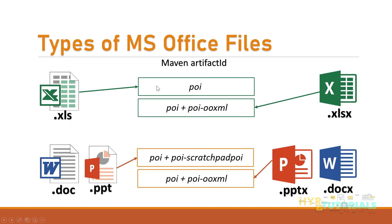For the older Excel format (.xls), you need to import the POI Maven artifact. For the newer Excel format (.xlsx), you need POI plus POI OOXML. Similarly, for older version documents or PPT, you need POI plus POI Scratchpad. For newer version PPT and documents, you need POI plus POI OOXML.